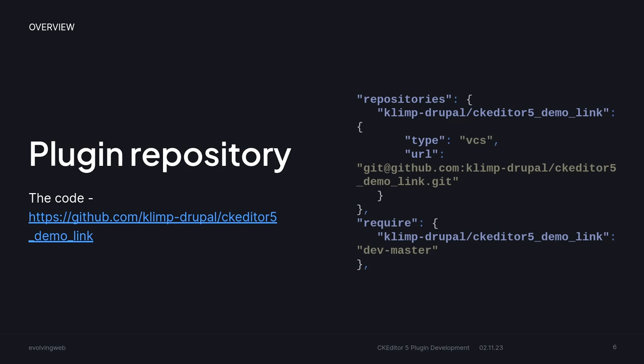I created a repo. I haven't actually figured out our company policy about public repos, so I created it in my personal GitHub account. If you're interested, go ahead, download the repo, and take a look. That's an example of how you can include it in your composer.json — very simple.